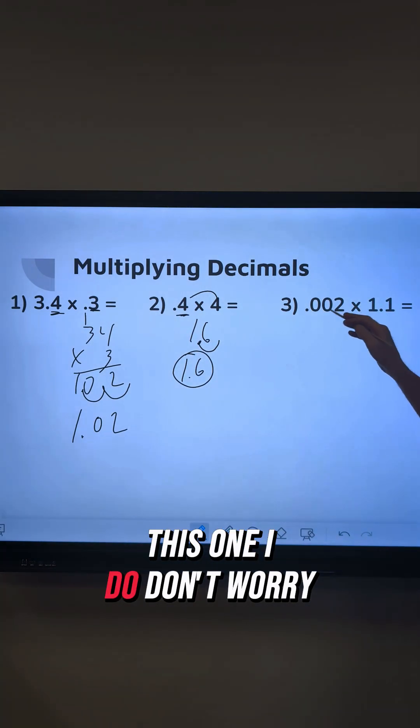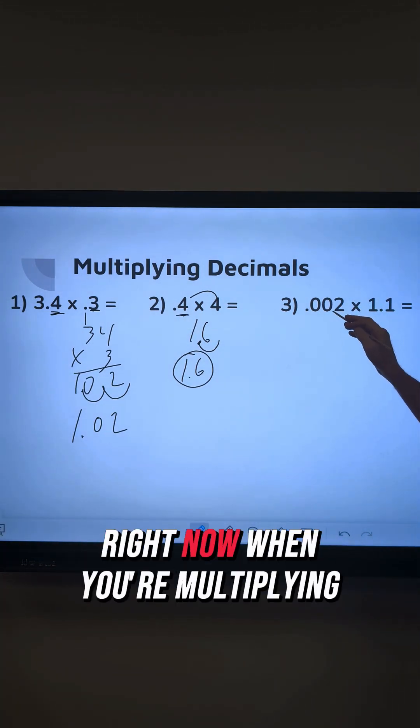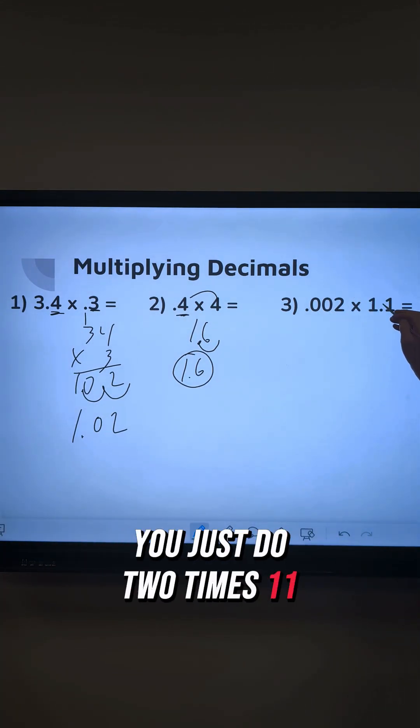This one, I do. Don't worry about these zeros right now when you're multiplying. You just do 2 times 11 and you get 22.